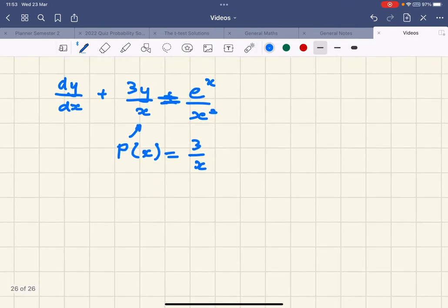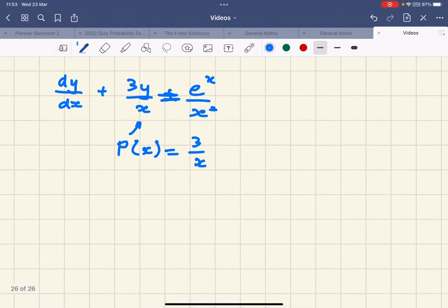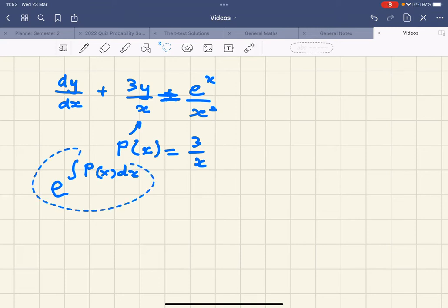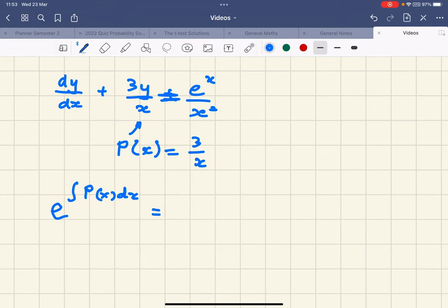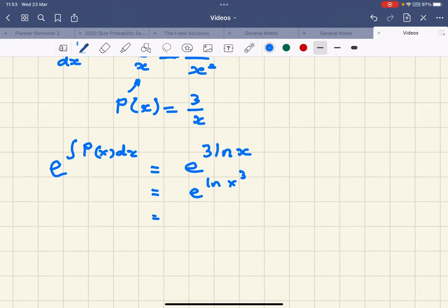Now what I'm going to do is go through the process of finding e to the power of the integral of P(x). Now that is going to give me e, and I'm going to integrate this 3 over x. So that gives me 3 ln x. That can be written as ln x³, and just doing a bit of simplification, that becomes x³.